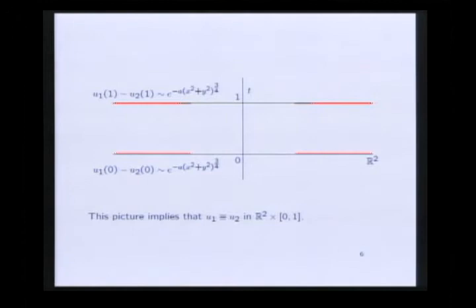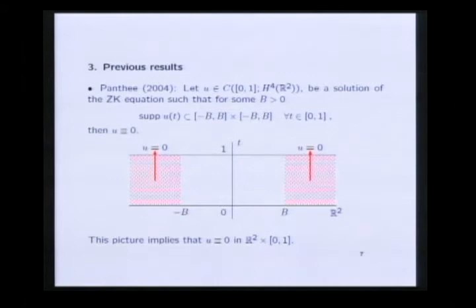This type of result has been studied for many evolution equations. Let me mention only three previous results. In 2004, Pantea proved that if we have a sufficiently smooth solution of the ZK such that for every T in the interval [0,1] the support of U of T is contained in a common compact set, then U must be identically equal to 0. In other words, if the solution U is 0 in these two zones, then it must be 0 in the whole strip R2 cross [0,1]. Pantea used complex analysis methods introduced by Bourgain.